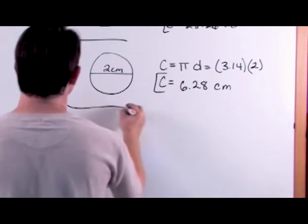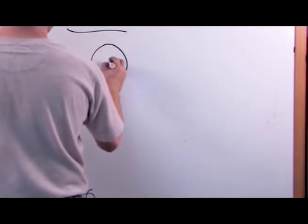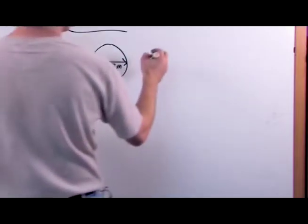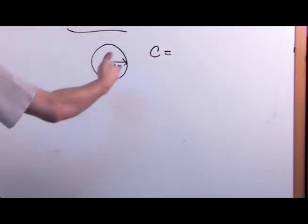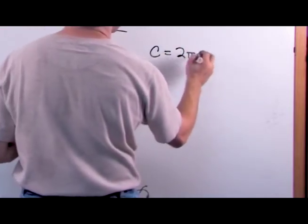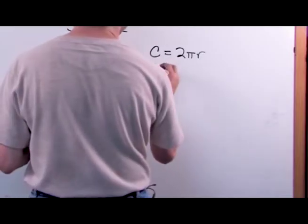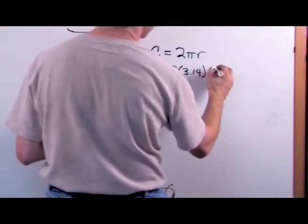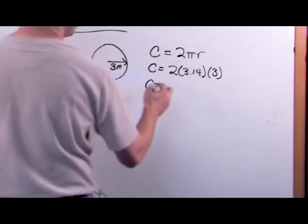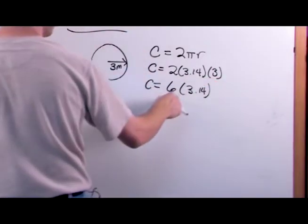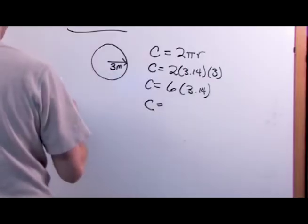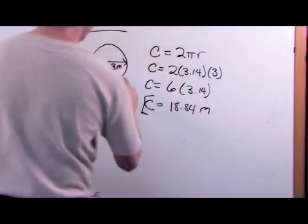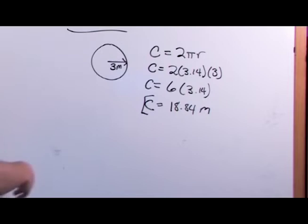The final example: here's a circle and you're given a radius of 3 meters. That's a radius, not a diameter. So because we have the radius in this problem, we want to use 2 pi r. It's 2 times 3.14 times r, which is 3. So the circumference equals 6 times 3.14, because 2 times 3 gives me 6. That gives us 18.84 meters. So this circle, if you go all the way around it, is about 18.84 meters long.